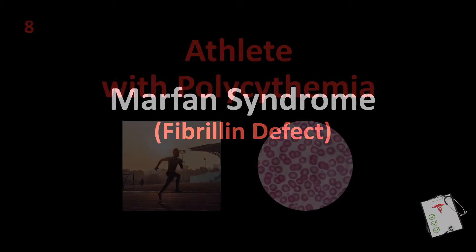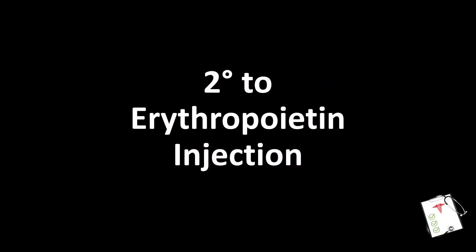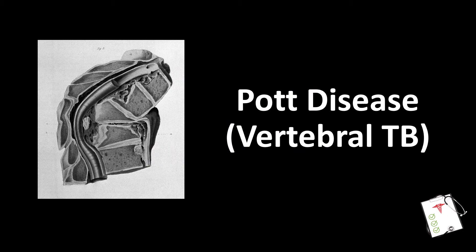Number 8: Athlete with polycythemia. Answer: Secondary to erythropoietin injection. Number 9: Back pain, fever, night sweats. Answer: Pott disease — vertebral tuberculosis.